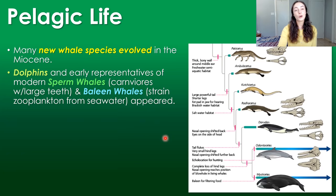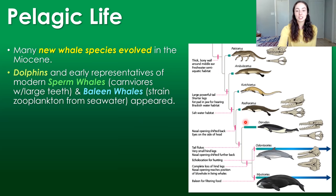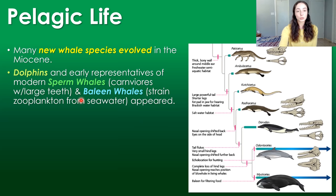First, let's talk about pelagic or open ocean life. Many new whale species evolved during the early Neogene or Miocene epoch. One of these was dolphins — the type of whale that radiated in the Miocene. Recalling from the Paleogene life video, whales evolved from hoofed land mammals that went back to the ocean. In the Miocene, early representatives of sperm whales also evolved — carnivores with large teeth — and early representatives of baleen whales that strain zooplankton from seawater also appeared.